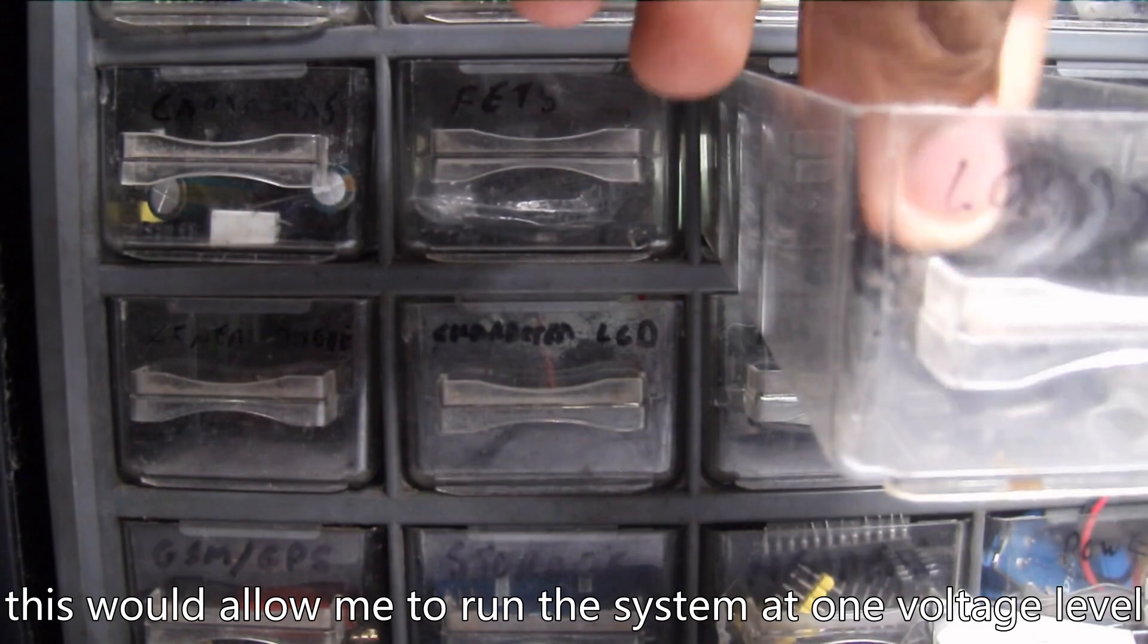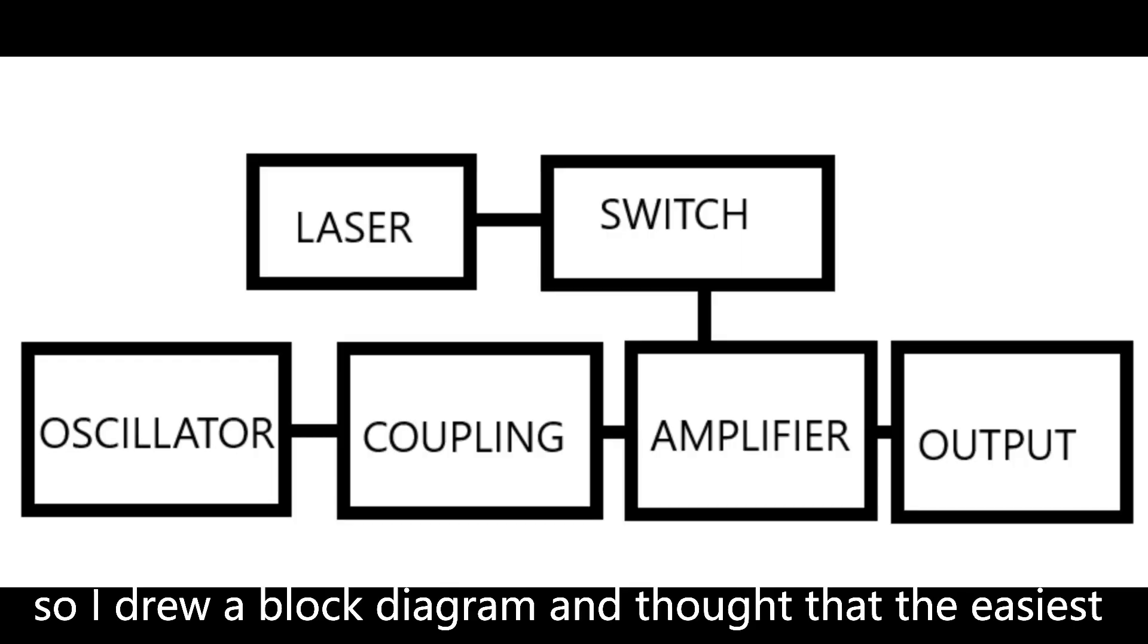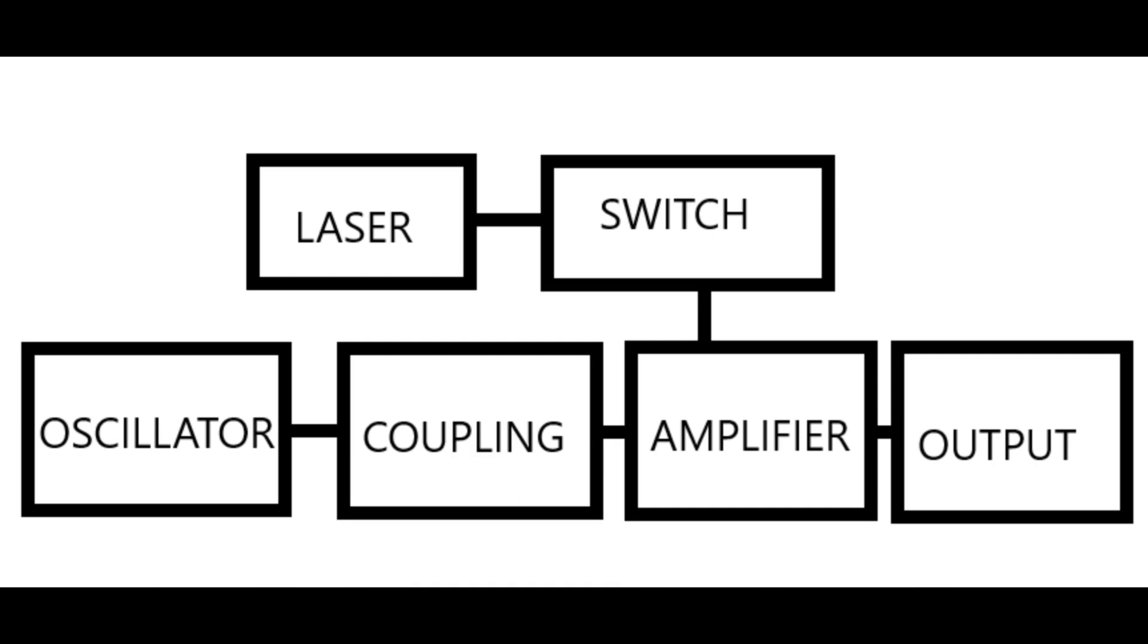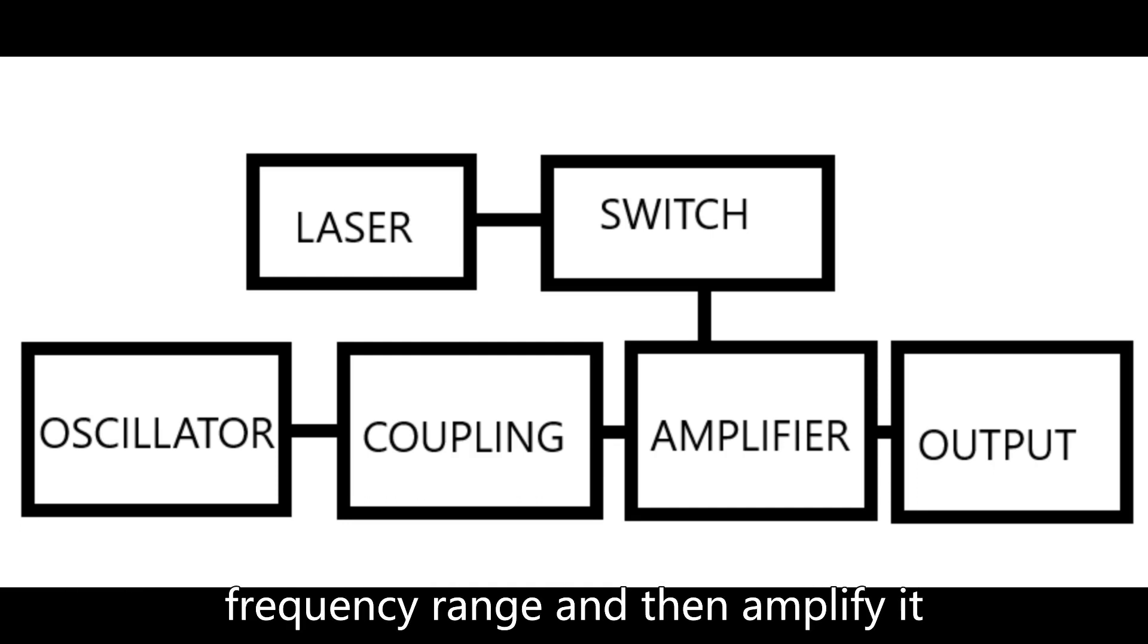This would allow me to run the system on any voltage level and makes life easier, so I drew a block diagram and saw the easiest way to build an alarm system was to first produce a square wave in an audible frequency range and then amplify it.